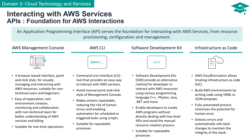Lastly, Infrastructure as Code, or IaC, is a powerful service that allows you to treat your infrastructure as code, building AWS environments by writing code in YAML or JSON templates using AWS CloudFormation. The fully automated process minimizes the potential for human error and enhances efficiency. AWS CloudFormation detects errors and, in case of issues, automatically rolls back changes to maintain the integrity of your stack.